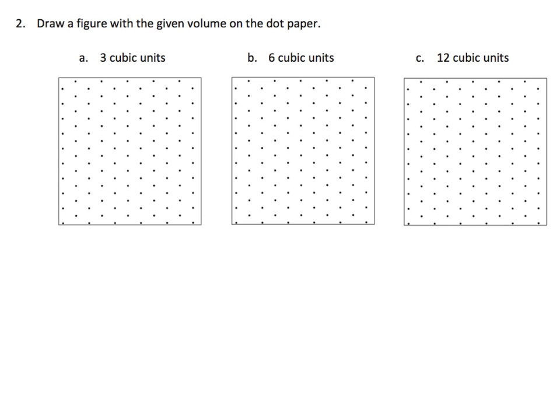This is going to be tricky because we're being asked to draw these figures using these triangular dot paper grids. We're going to begin by drawing three cubic units, then double it to six cubic units, and then double it to get twelve cubic units. It's really convenient that these problems are organized this way. I'm going to zoom in a little bit here.